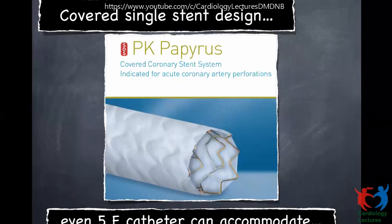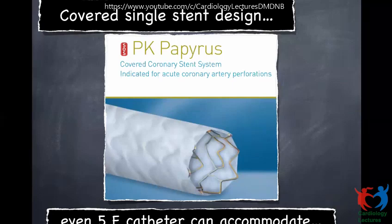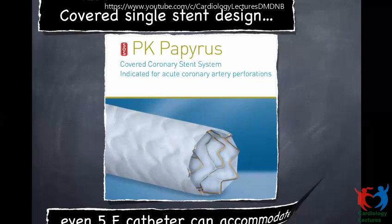The PK Papyrus covered stent goes through even 5 French catheters. Unlike the Graftmaster which has two stents sandwiching PTFE material, the Papyrus has the PTFE material stitched to a single stent, resulting in a lower profile compared to the Graftmaster.